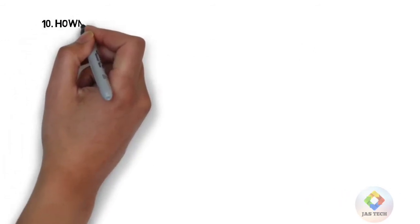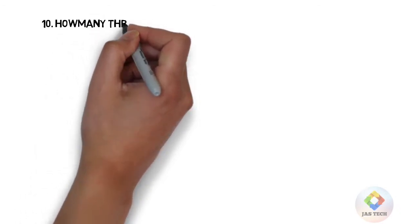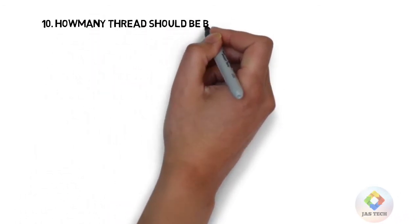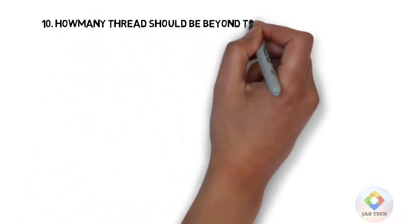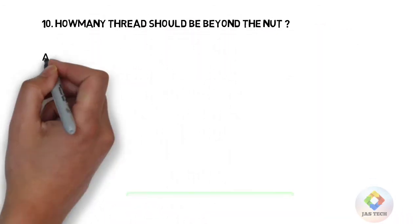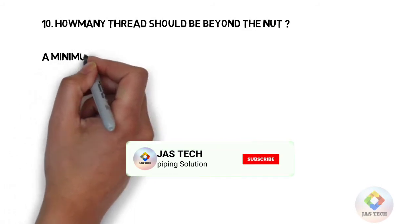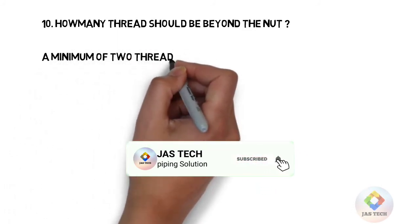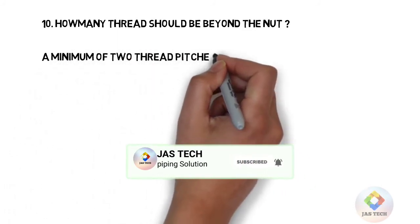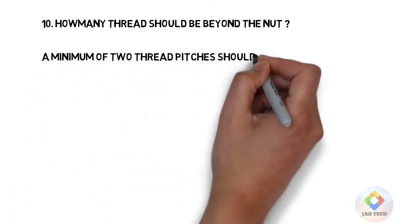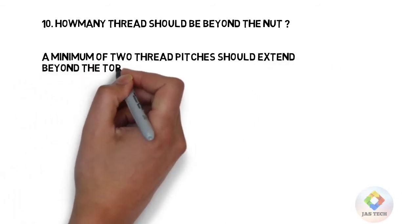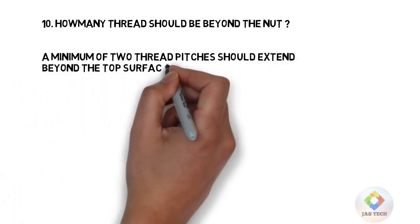Q10: How many threads should be beyond the nuts? A minimum of 2 thread pitches should extend beyond the top surface of the nuts.